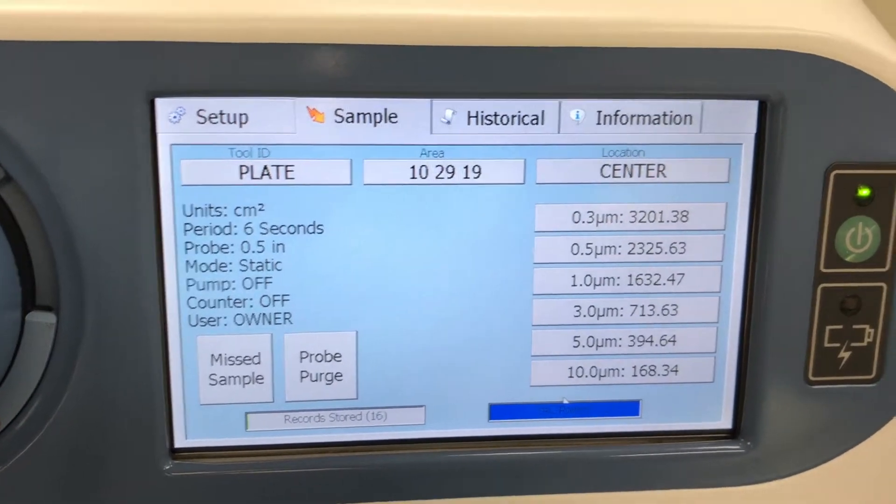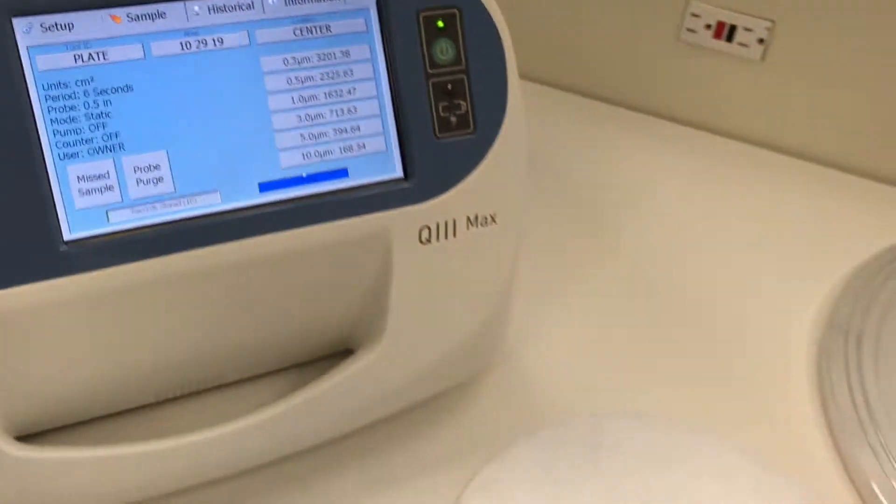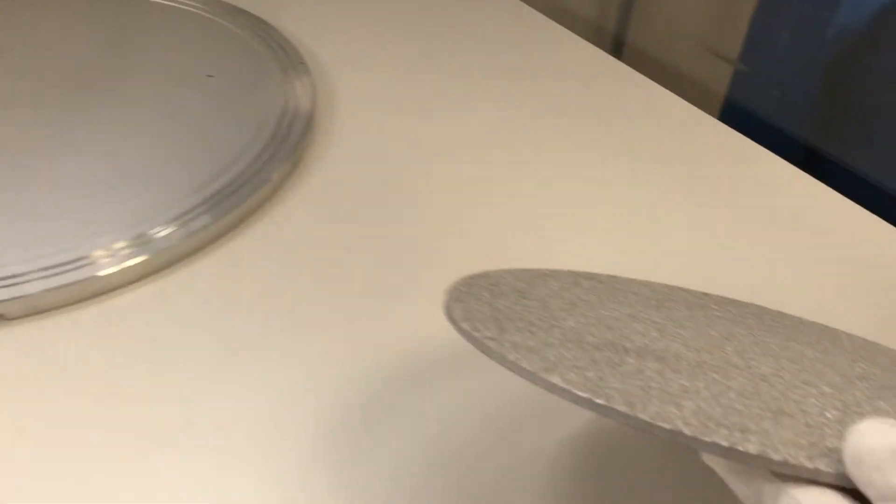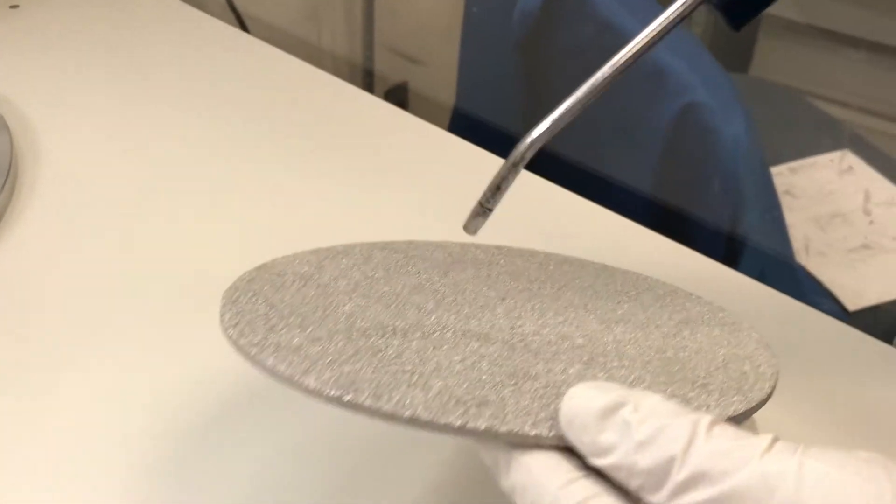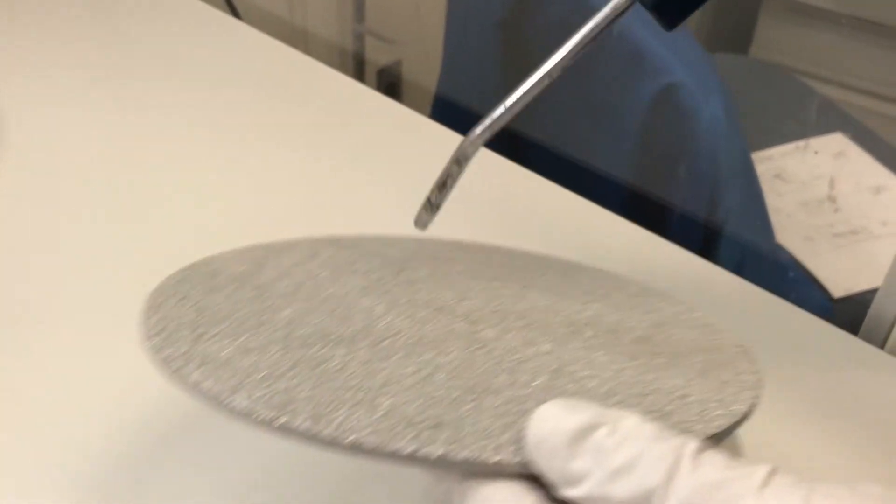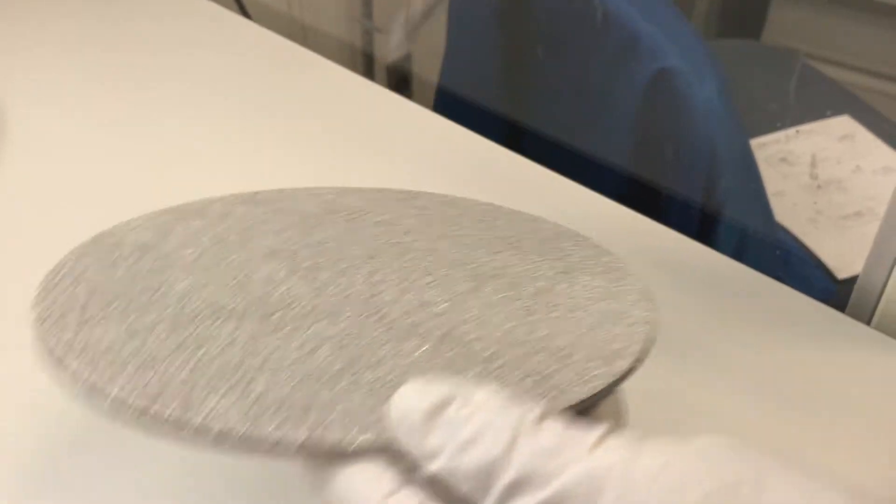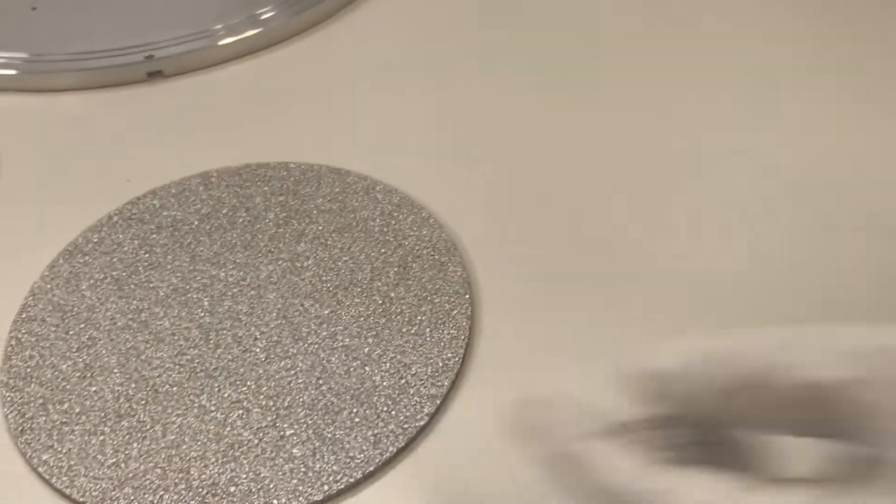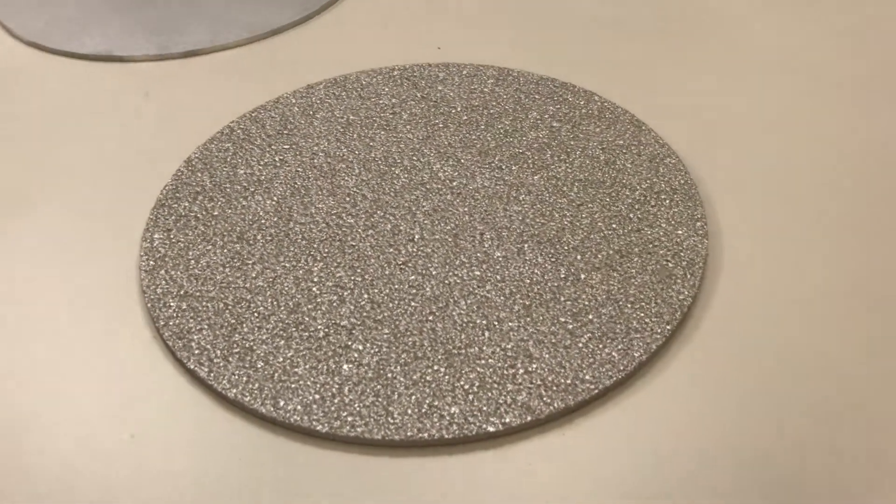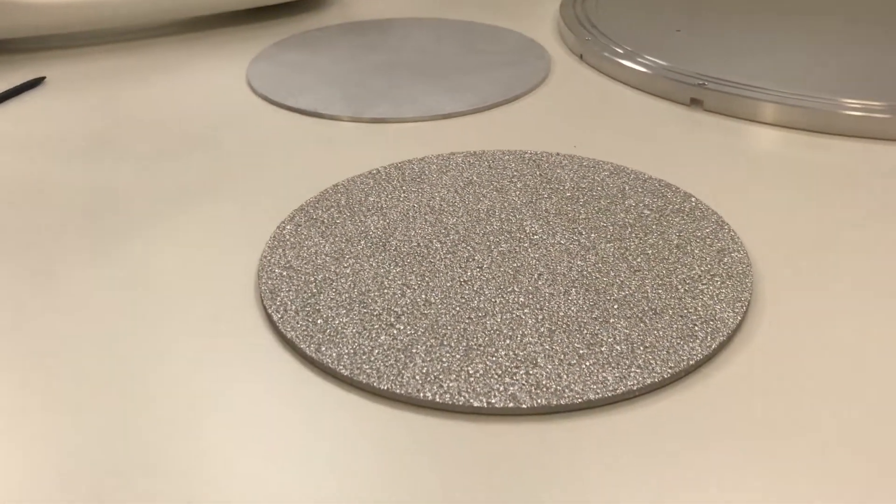Because this plate is so contaminated and rough, it can't be wiped with the wiper and IPA. And we are cleaning it using nitrogen to blow off the surface. Nitrogen or clean dry air is quite effective in removing particles lightly adhered to the surface.